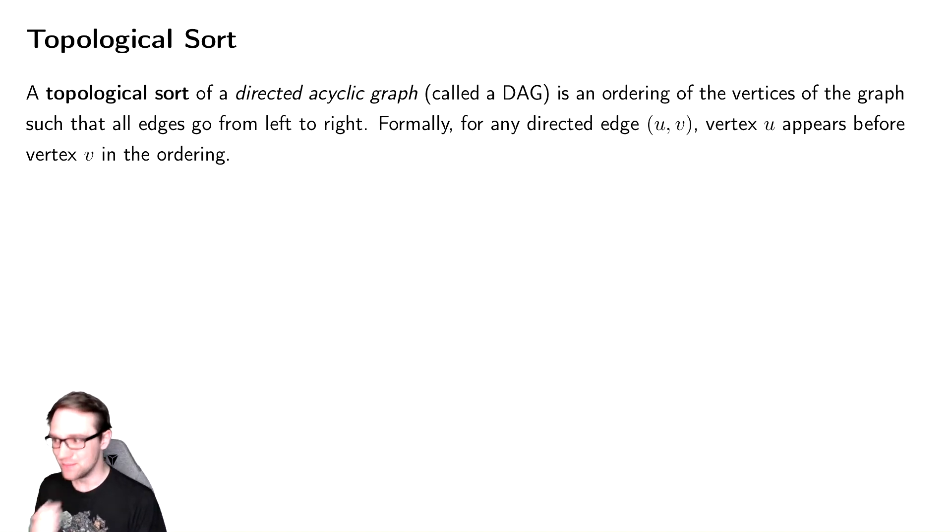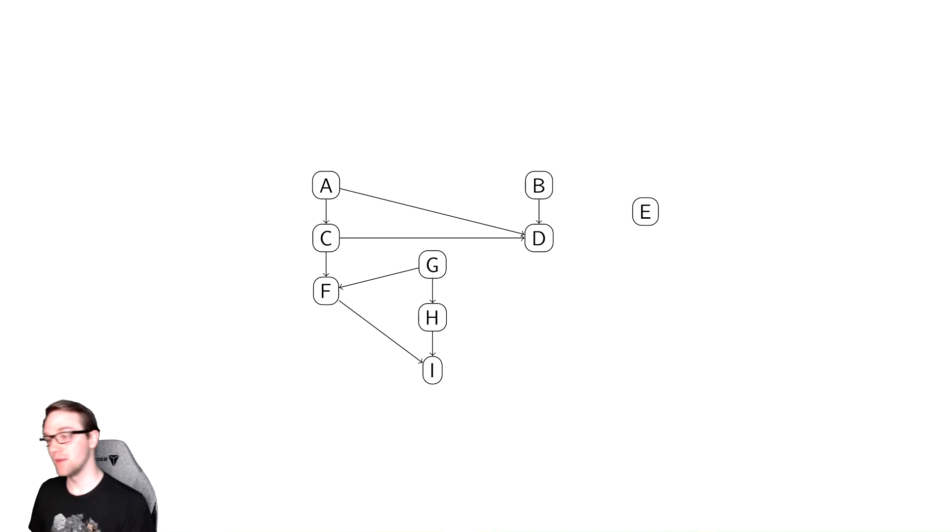It's actually incredibly easy to do, so let's walk through it. Here's an example of a directed acyclic graph that is critical for this. It only works on a directed acyclic graph, so we have arrows, and there aren't going to be any cycles in this graph.